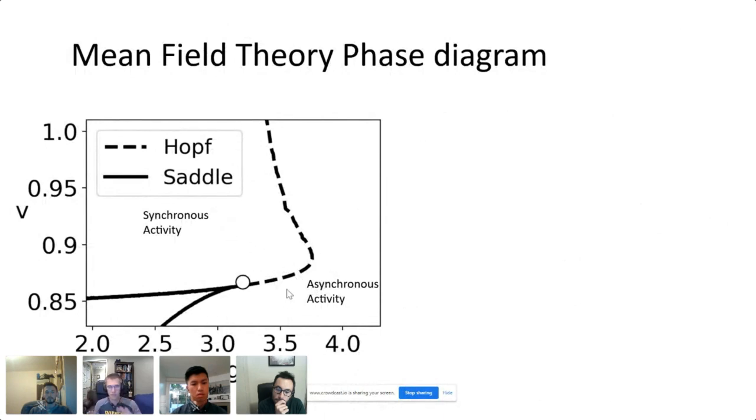We take the mean field theory of this model and we find, thinking back to this theory of criticality, we need those two phases. The axis here, g is the ratio between inhibition and excitation and v is the non-dimensionalized scale of the external input. In this region the mean field theory gives a stationary solution that's stable, so the mean firing rate is constant. We call that asynchronous activity. Then we find a Hopf bifurcation, so oscillations occur in this region.